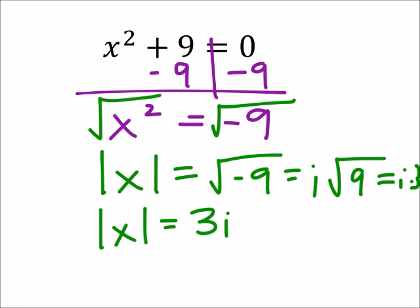To finish this off, we need to split this absolute value into two: the positive and negative. So x equals positive 3i, but x also equals negative 3i.